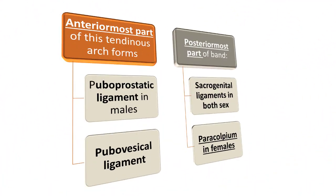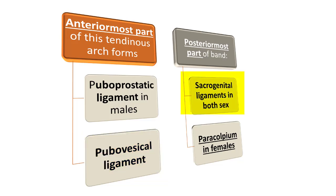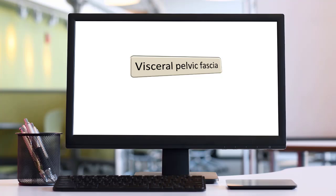The anterior-most part of the tendinous arc forms the pubo-prostatic ligament in males and the pubo-vesical ligament in females. The posterior-most part forms the sacrogenital ligament in both sexes, which attaches the sacrum and sides of the rectum to the prostate in males and the vagina in females. It also forms the paracolpia in females, which suspend the vagina and help bear the weight of the fundus of the bladder.